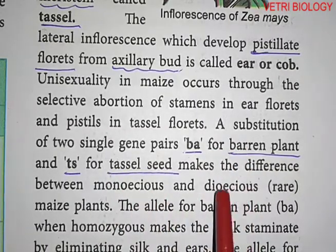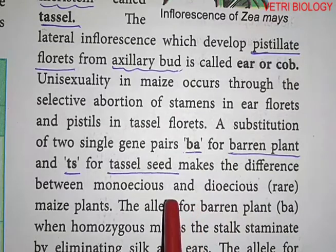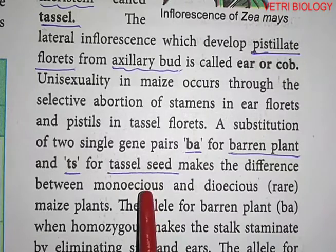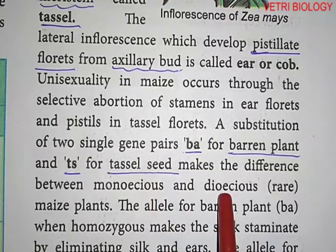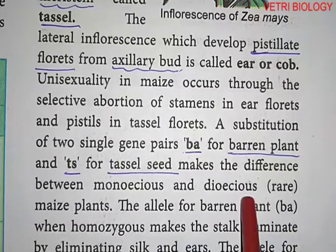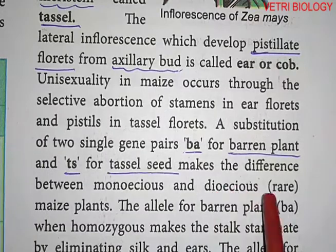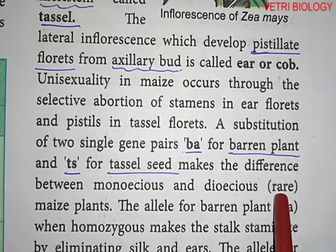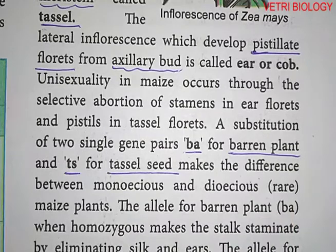The difference between monoecious and dioecious is found here. Monoecious means male and female flowers are present in the same plant, while dioecious means male and female flowers are on separate plants. This is the normal condition in cultivated maize plants.